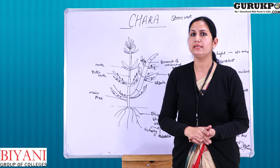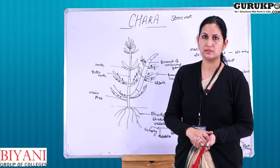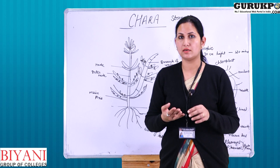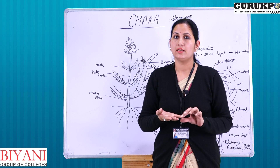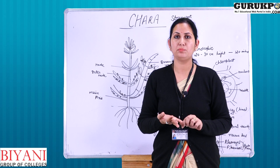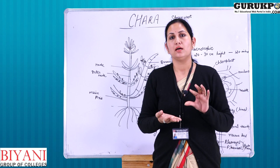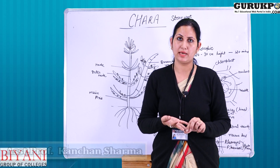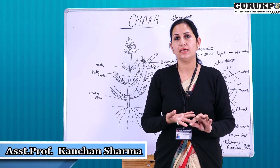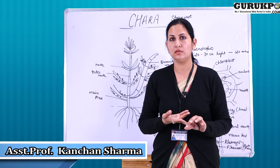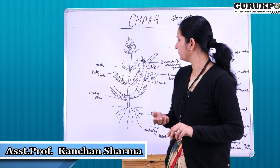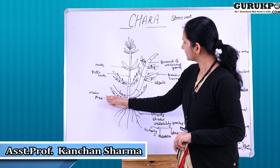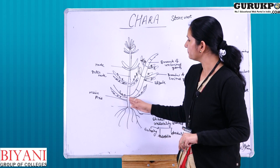The rhizoids are sometimes whitish or pale in color. Their main functions include anchoring, giving support to the plant, absorbing nutrition and water, and in Chara they also help in vegetative reproduction. The main plant body forms the main axis of Chara.